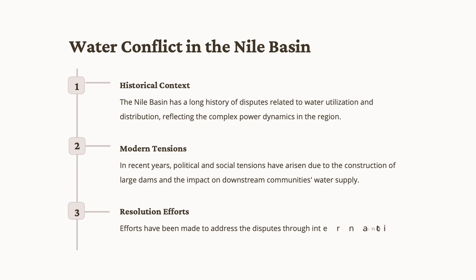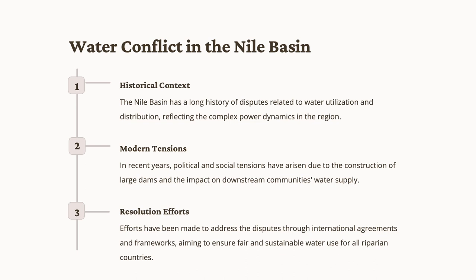International efforts have been initiated to address the Nile Basin water conflict. The Cooperative Framework Agreement (CFA) seeks a more inclusive and cooperative approach to managing the Nile's water, acknowledging the rights of all riparian nations. Diplomatic negotiations facilitated by the Nile Basin Initiative aim to foster collaboration and resolve disputes. An exemplary case within this conflict is the negotiations surrounding the Grand Ethiopian Renaissance Dam — the dispute is so complex that the UN has intervened.